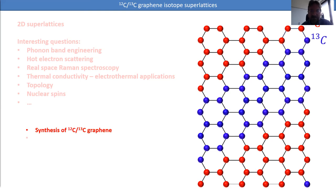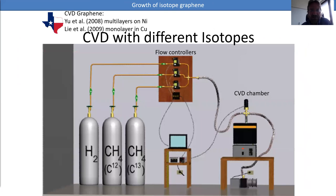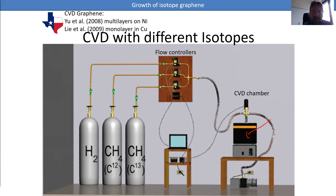So how do we make these structures? We essentially followed the recipe from the Austin group, which started synthesizing graphene using chemical vapor deposition (CVD) in 2008-2009 on copper. You heat your copper surface, place it in an oven, flow methane and hydrogen gas, and it creates a nice single-layer graphene. What is special in our system is that we use a vertical chamber oven, which is very small and efficient — important especially since carbon-13 methane is more expensive.